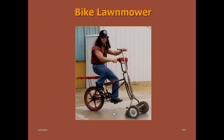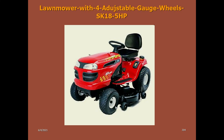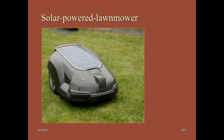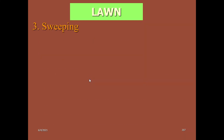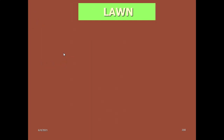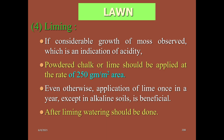This is the bike lawnmower — it cuts the grass at a specific height. This is a lawnmower with four adjustable gauge wheels. This is a solar powered rotary lawnmower. Generally in India we use rotary mowers in the garden. After lawn mowing, the cut grass should be cleaned off — this is called sweeping. We should clean the lawn after mowing, including fallen leaves and other debris, in every morning and evening.